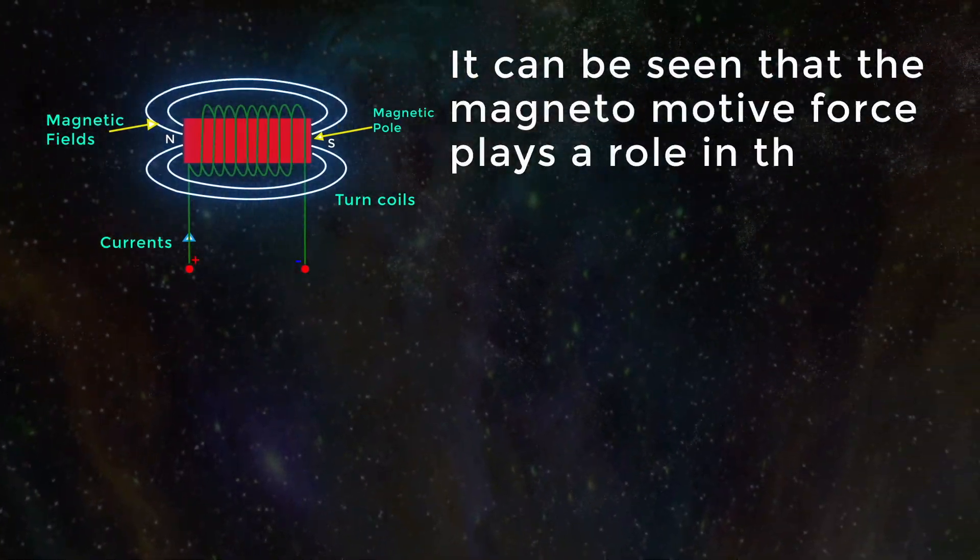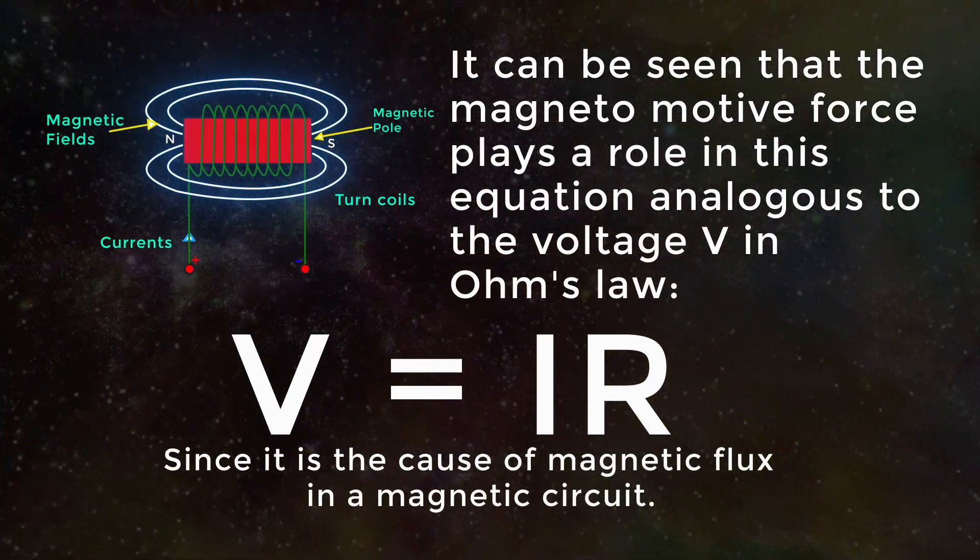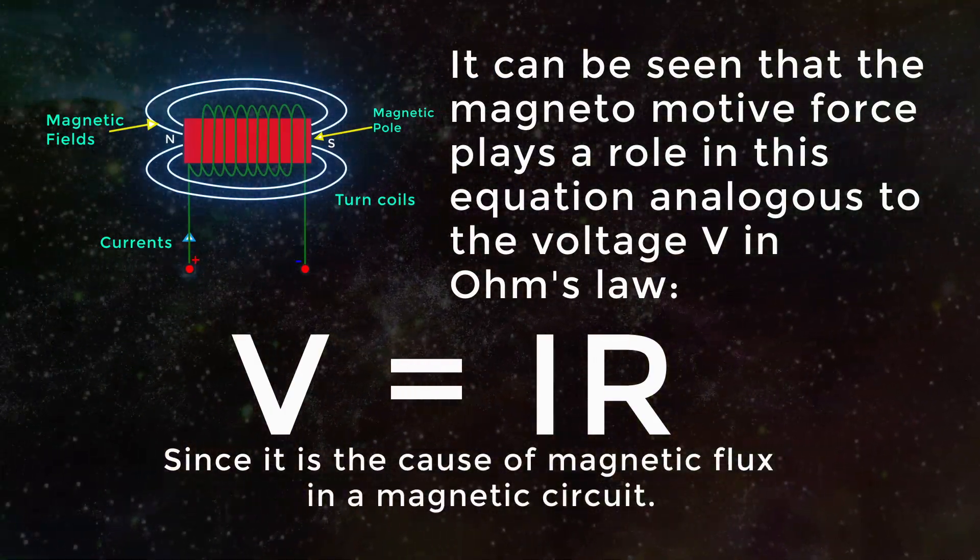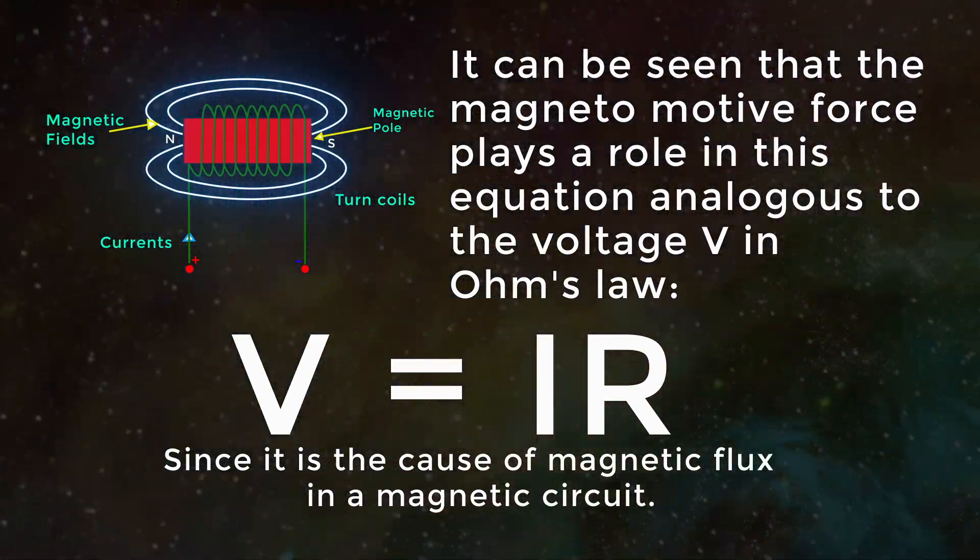It can be seen that the magnetomotive force plays a role in the equation analogous to the voltage V in Ohm's law, V equals I R, since it is the cause of the magnetic flux in a magnetic circuit.